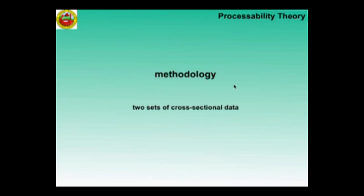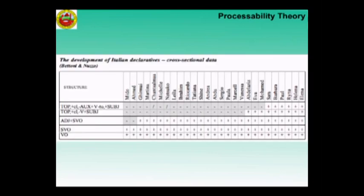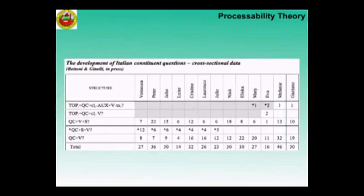Yes. We have two sets of cross-sectional data: one with 27 learners of Italian — immigrants in Italy of various provenance — and the other with 12 learners and native speaker cross-sectional data for the development of constituent questions.